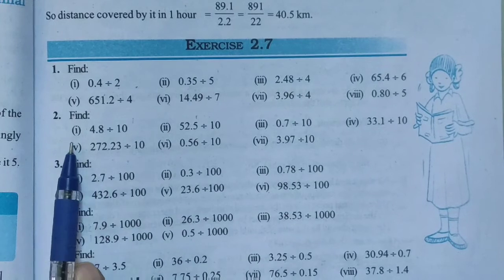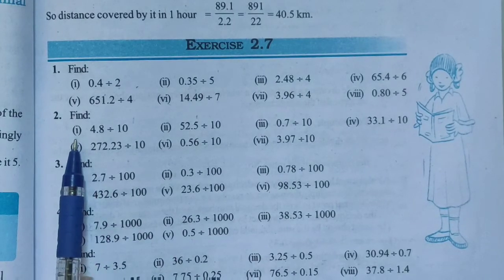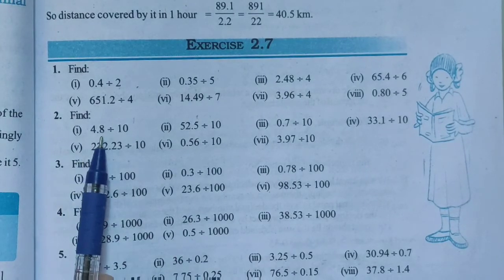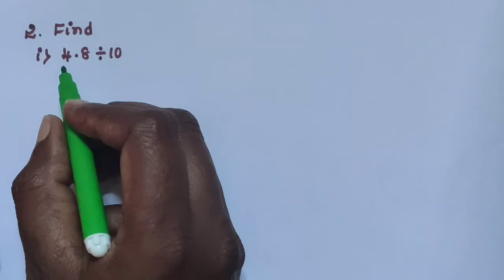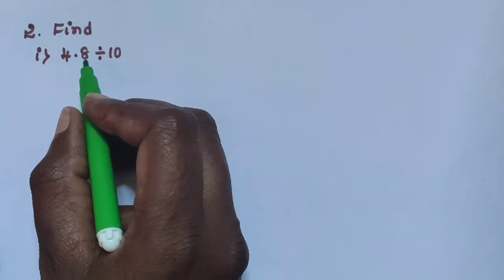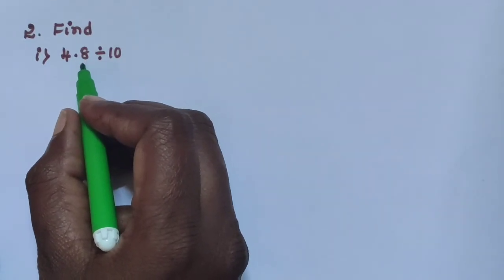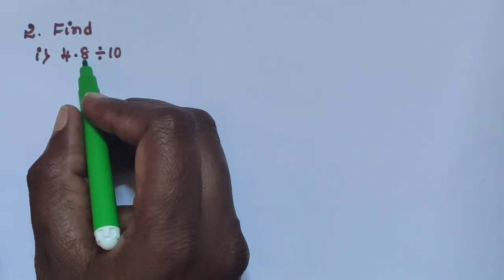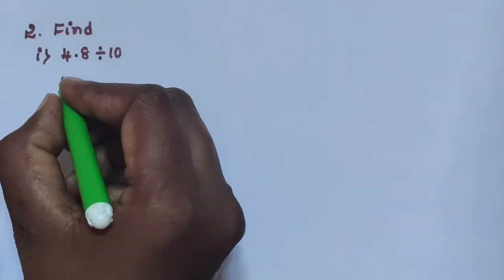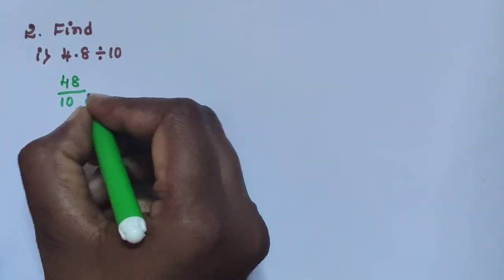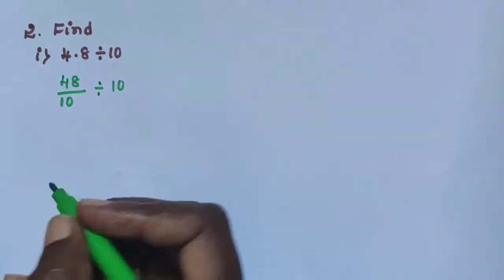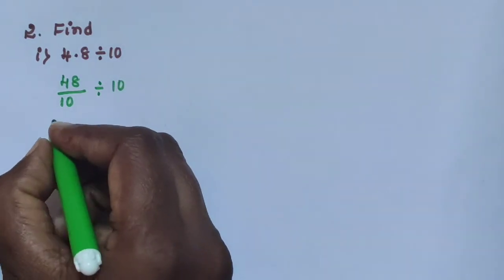Next, question number 2, find. Sub question 1: 4.8 is divided by 10. Using the same process, 4.8 has one number on the 10th place, so divide by 10. Write as 48 divided by 10, then divide by 10.